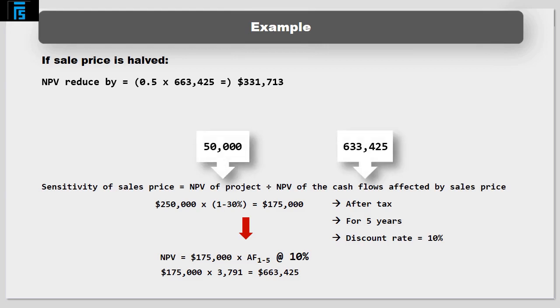So we can afford to lose $50,000 divided by $663,425 equals 7.5% of sales revenue before we reduce our NPV down to zero. In other words, if sales price falls by 7.5% we will eliminate NPV. We are therefore 7.5% sensitive to sales price.